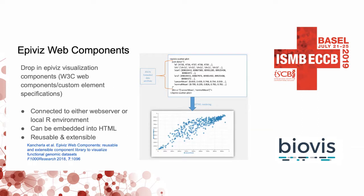To help with implementation and creating visualization components easily, I worked on EpiViz Web Components — that's what Joshua was showing in the presentation before. These are drop-in components that you can integrate with any framework that works with HTML. On the image on the right, you can see how the element looks on an HTML page, and when the browser renders it, it converts itself into a scatterplot.